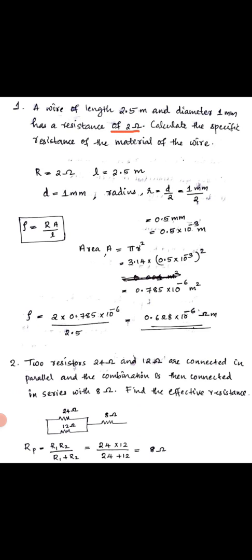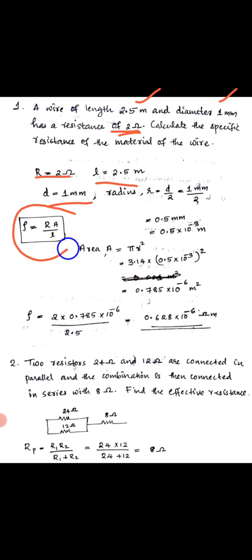We have: length of wire = 2.5 meter, diameter = 1 millimeter, resistance R = 2 ohm. We need to find the specific resistance, also called resistivity. The formula is: rho is equal to R into A divided by L, where R is resistance, A is the area of cross-section, and L is the length.